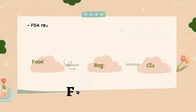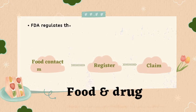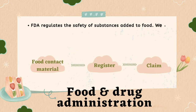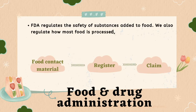Plastics, paper, and other packaging materials help maintain sterility and shelf life in the food supply chain. However, there is a risk of chemical transfer from packaging to food, which is why the FDA regulates food contact materials.